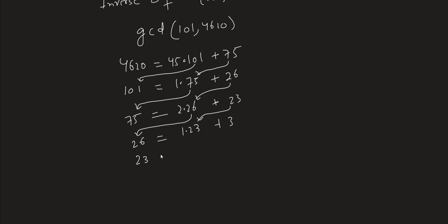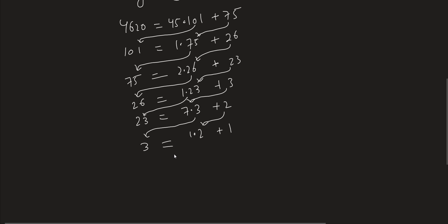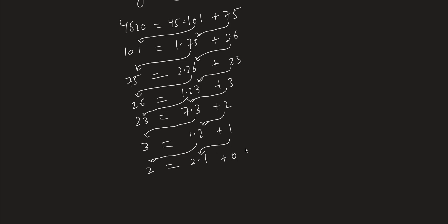We repeat: divide 26 by 23, getting a quotient of 1 and a remainder of 3. Then divide 23 by 3: 23 = 7×3 + 2, since 7×3 = 21. Divide 3 by 2: 3 = 1×2 + 1. Then 2 = 2×1 + 0, so we get a remainder of zero and stop here.